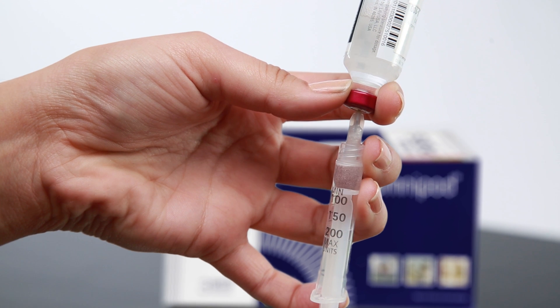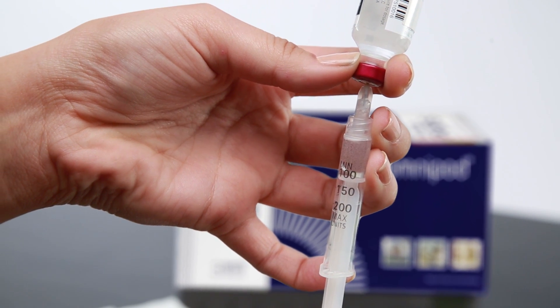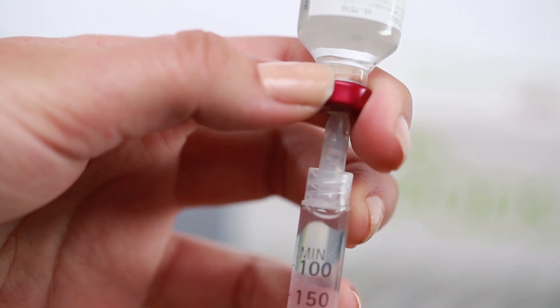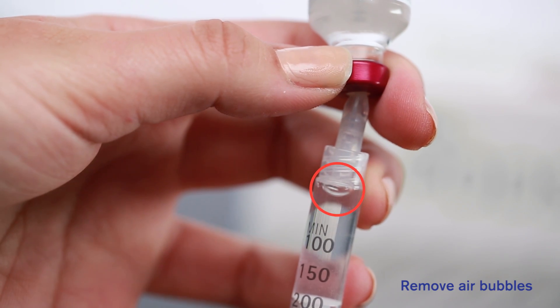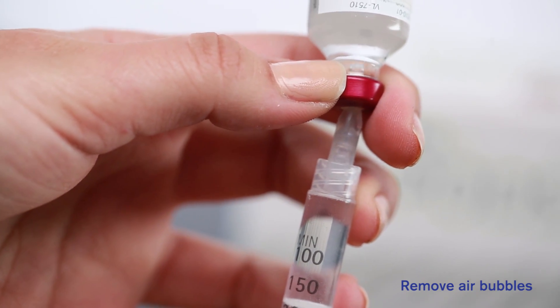Be sure to remove any bubbles from the syringe. To do this, point the needle upwards and tap the side of the syringe to move any air bubbles to the top. Now you can carefully push out any remaining air bubbles.